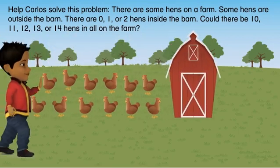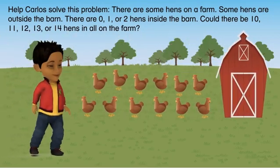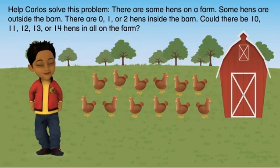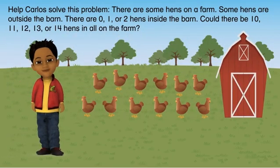Help Carlos solve this problem. There are some hens on a farm. Some hens are outside the barn. There are 0, 1, or 2 hens inside the barn. Could there be 10, 11, 12, 13, or 14 hens in all on the farm?